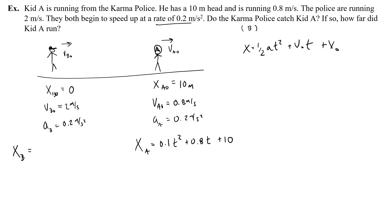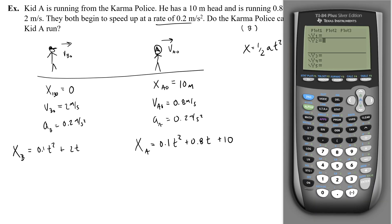For B, the Karma Police, you would have 0.1 t squared also, plus 2 times t, plus nothing. Okay, so now let's graph these. Okay, so for the first equation, 0.1 x squared, plus 2 x, and that's it. And for equation two, 0.1 x squared, plus 0.8 x, plus 10. Okay, now we graph and hope our window looks right.